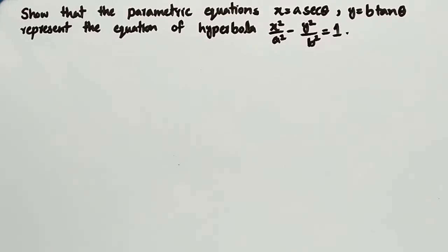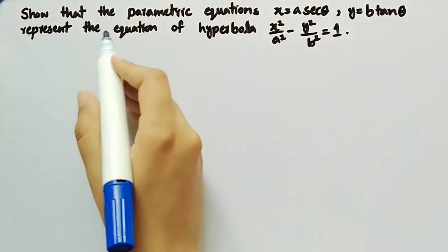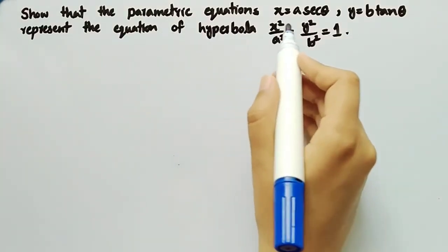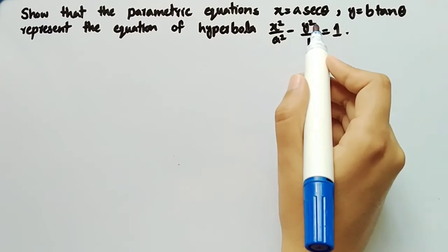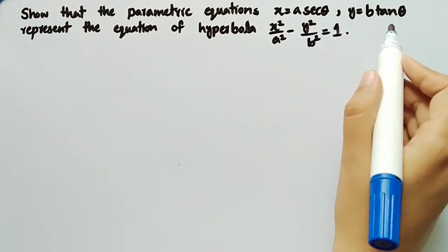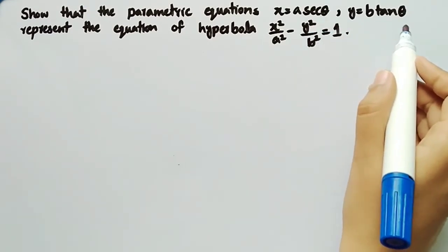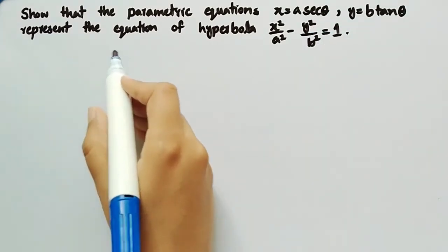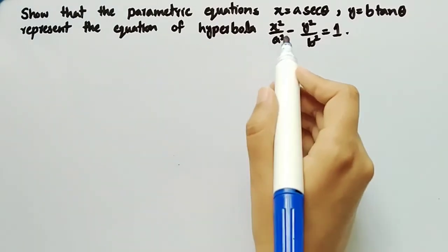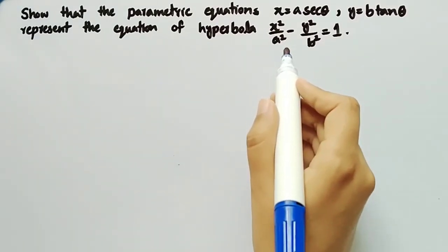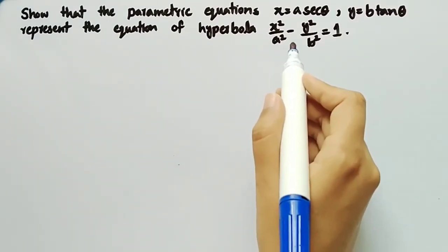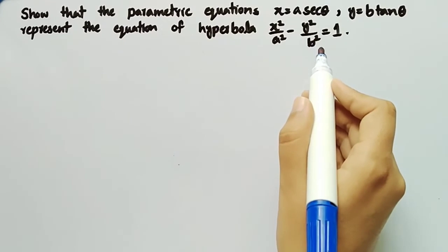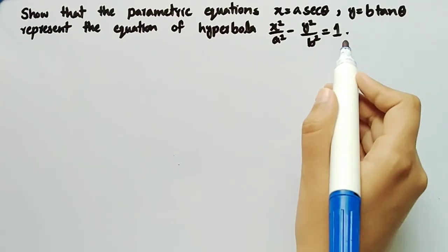In this video, we will show that the parametric equations x = a·sec(θ) and y = b·tan(θ) represent the equation of hyperbola x²/a² − y²/b² = 1.